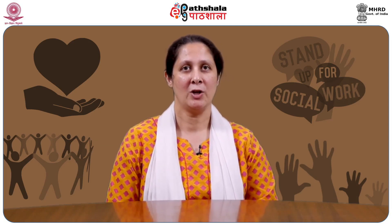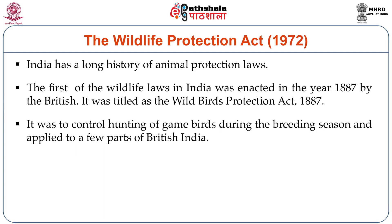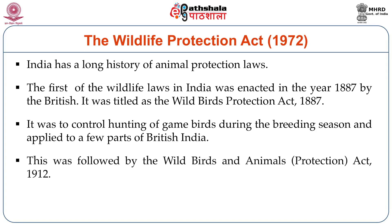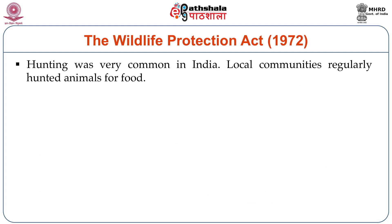India has a long history of animal protection laws. The first wildlife laws were enacted in 1887 by the British government — the Wild Birds Protection Act of 1887 — mainly to control hunting of game birds during the breeding season, applicable only to parts of British India. This was followed by the Wild Birds and Animals Protection Act of 1912, made applicable throughout British India. Hunting was very common in India.